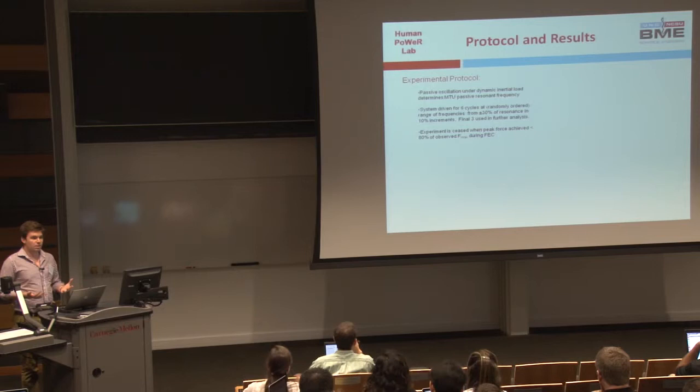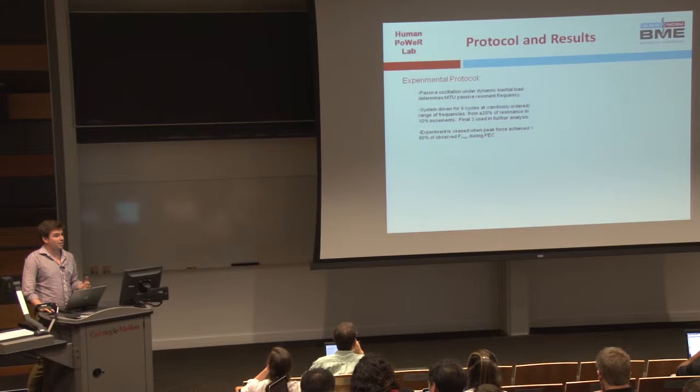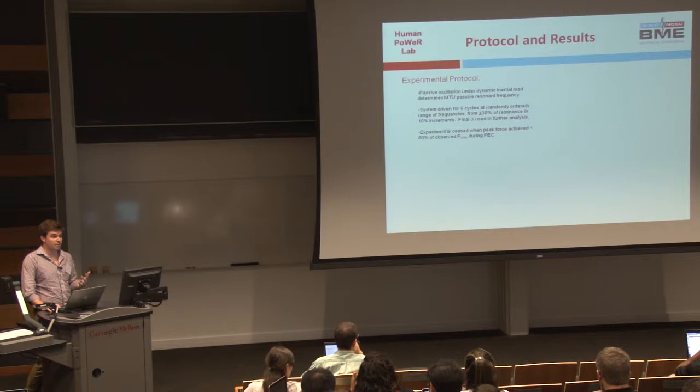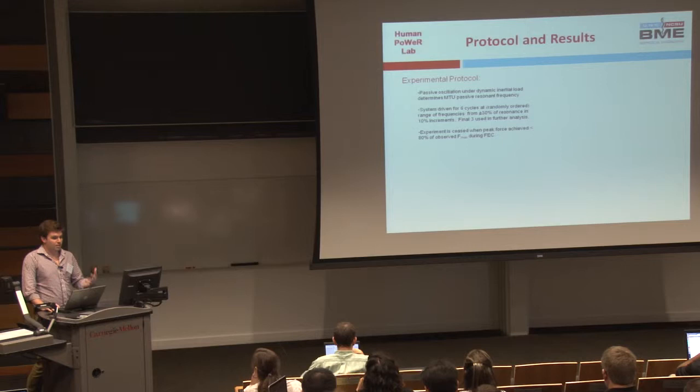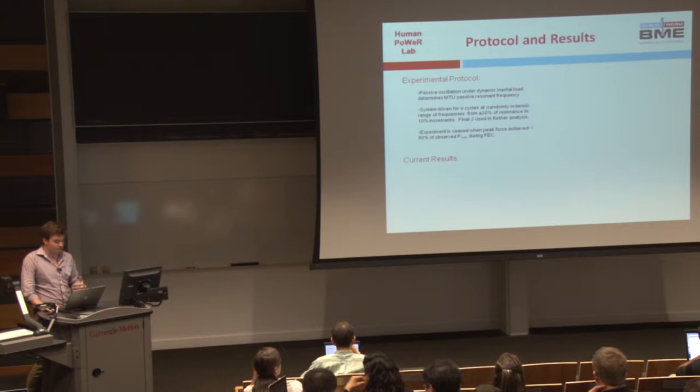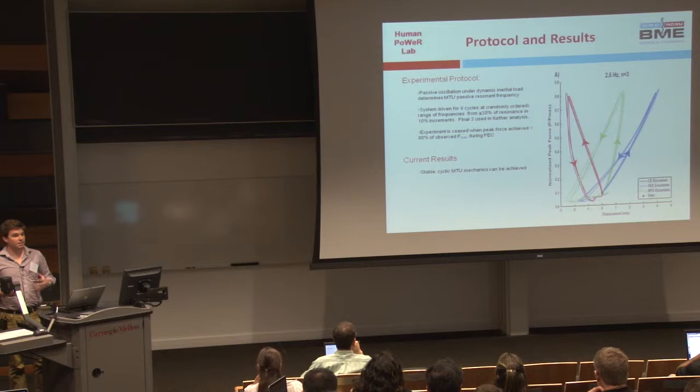One of the big issues with electrical stimulation is fatigue. We constantly check to make sure we're getting greater than 80% of our observed peak force during a fixed-end contraction. As soon as we fall below that threshold, we assume the muscle is no longer giving a good representation of its contraction capabilities. We do have some current results from this — we are able to generate stable and cyclic muscle-tendon unit mechanics.